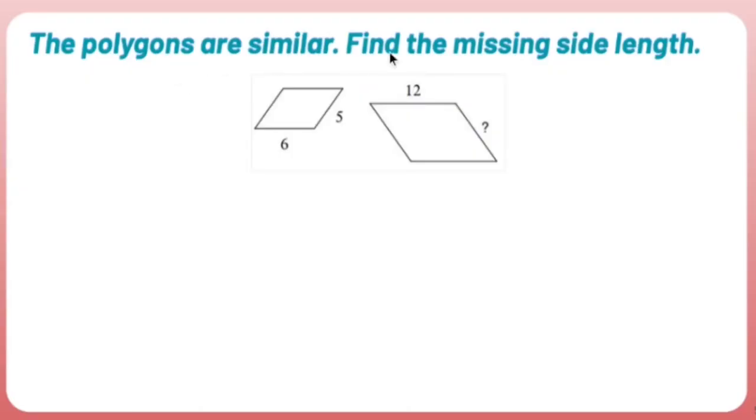The polygons are similar. Find the missing side length. Whenever you're being asked to find the missing side length of similar figures, you're going to want to use proportions.